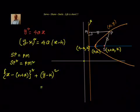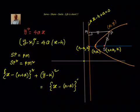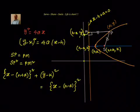What is PM²? PM² is the perpendicular distance from point (x, y) to the directrix. The equation of the directrix is x = h − a, or x − h + a = 0. Since M lies on this vertical line, its coordinates are (h − a, y), so PM² = (x − (h − a))² = (x − h + a)².